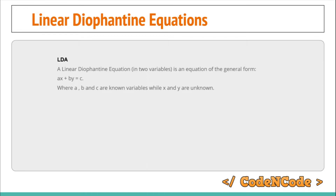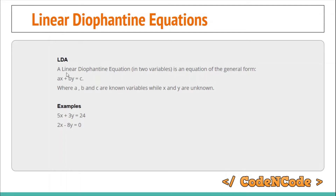Linear Diophantine equations (LDE) in two variables are equations of the form ax + by = c, where a, b, and c are known and x and y are unknown. The goal is to find integer coefficients x and y. Examples include 5x + 3y = 24 or 2x - 8y = 0. Depending on the values of a, b, and c, there may be zero, infinite, or a finite number of solutions.